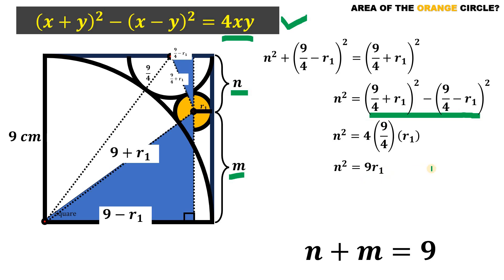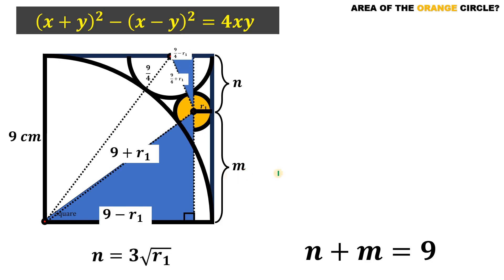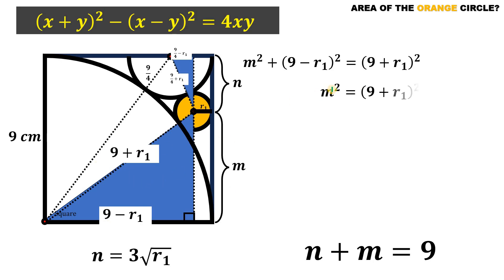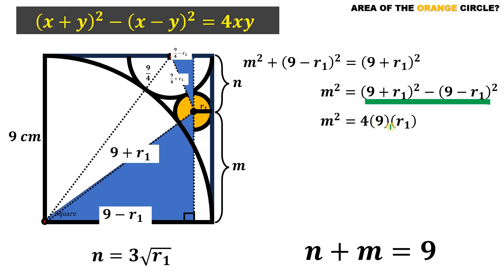Taking the square root of both sides, N = 3√R₁. Setting that aside, now let's find M using the big right triangle: M² + (9 − R₁)² = (9 + R₁)². Rearranging and applying the same identity gives M² = 4 · 9 · R₁ = 36R₁. Taking the square root of both sides — the square root of 36 is 6 — so M = 6√R₁.